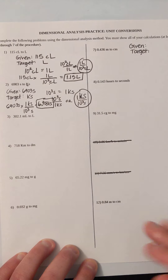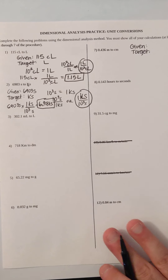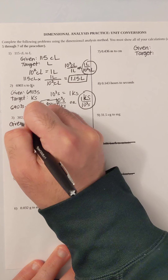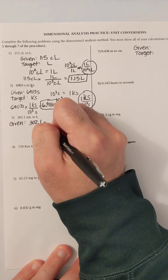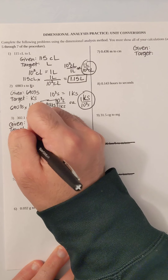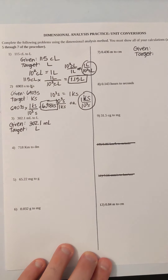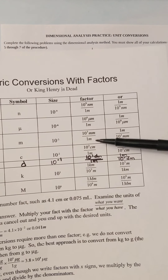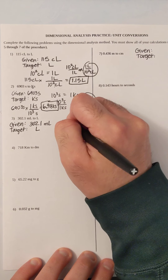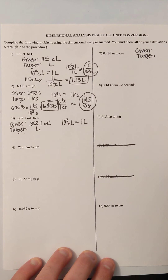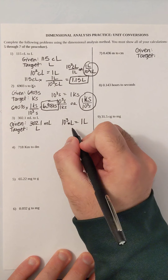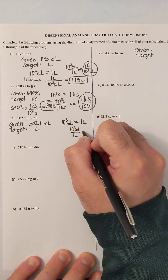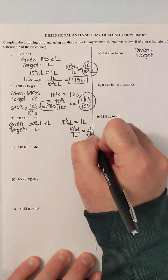So 6.903. Let's do the next one. I have 302.1 milliliters to liters. My given is 302.1 milliliters and my target is liters. As you might have seen in my previous video, milli is 10 to the third, so 10 to the third milliliters is equal to one liter. I could think about my conversion factors: either 10 to the third milliliters over one liter, or the reverse — one liter over 10 to the third milliliters.